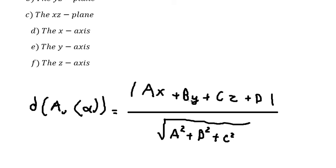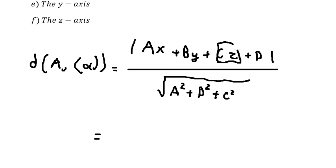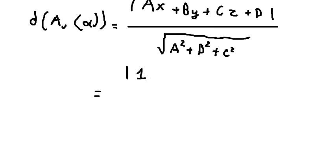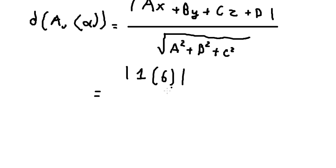We only use a, b, c. Now for question number one — the xy-plane, that is about z equals zero. So a, b, and d are zero. The coefficient of c is one. For z we have number six, over the square root of one to the power of two. So we get number six.